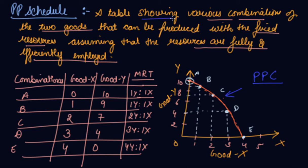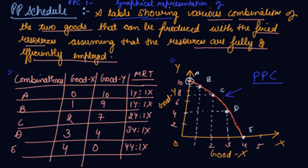The graphical representation of various combinations of the two goods that can be produced with fixed resources, assuming that the resources are fully and efficiently employed, is your production possibility curve. In this video we discussed the assumptions, the schedule, and the curve. This curve is downward sloping and concave to the origin.